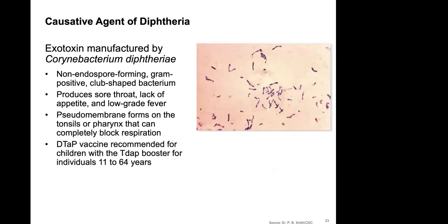The causative agent of diphtheria is an exotoxin produced by Corynebacterium diphtheriae, which causes a pseudomembrane to form on the back of the tonsils. Corynebacterium diphtheriae has a very distinct odor — a seasoned doctor can make a quick diagnosis just from the smell on a patient's breath. The DTaP vaccine is recommended for children, with a Tdap booster for individuals ages 11 to 64.